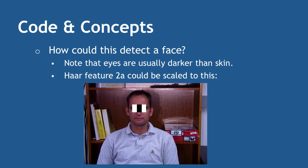But a single classifier isn't enough, because other things in the image — like text on a zip drive — could also match that feature. As you go through with these classifiers and try them at different scales, starting big and going small, you zero in on where the feature is. A single classifier by itself would match many different things in the picture.